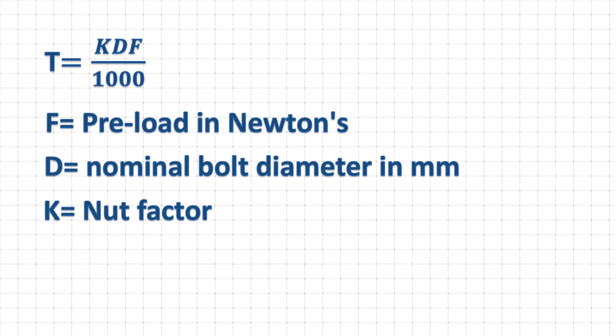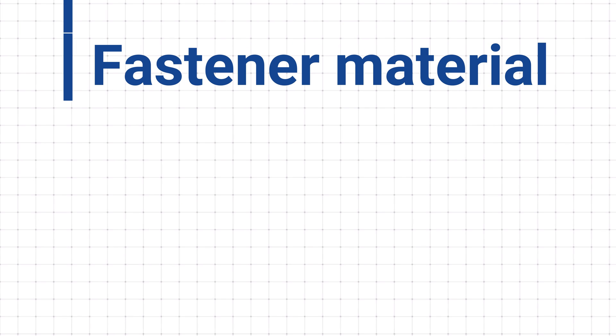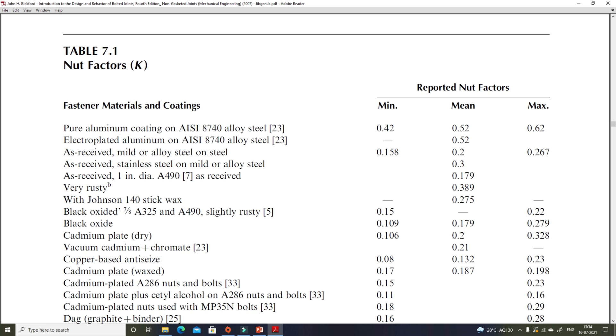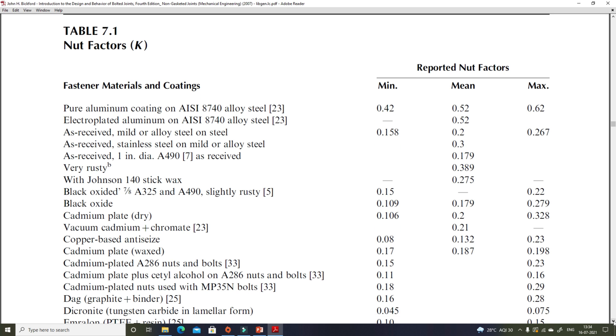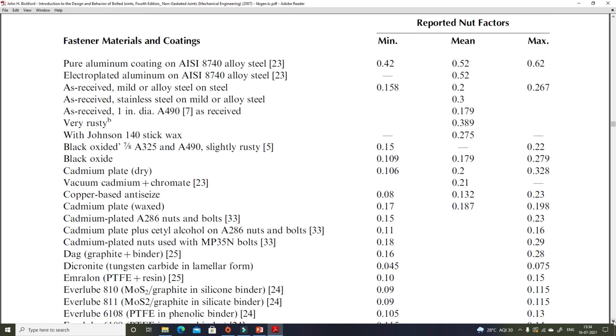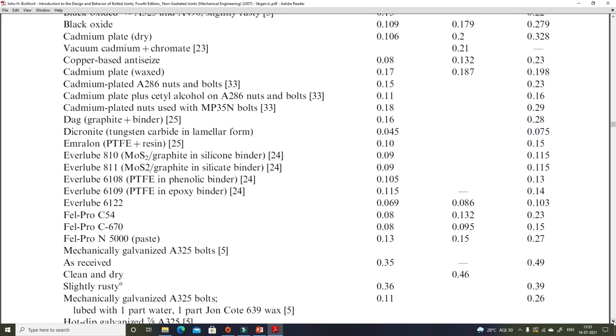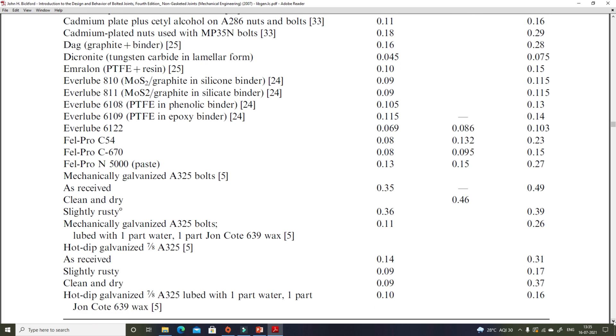The value of nut factor depends on fastener materials, type of coatings and lubricant. You can use this table to select appropriate nut factor. As you can see here, for mild steel or alloy steel bolts, mean value of nut factor is 0.2.